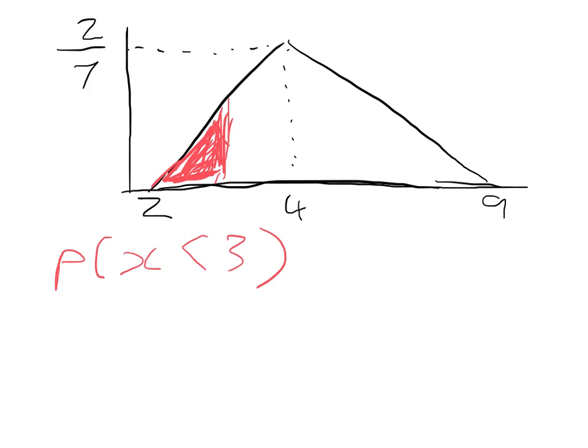This triangle is going to have a height of f(3) and a base of 3 minus 2, which is 1. So we want to find out what that height is — that's f(3). We start by identifying: our a is 2, our b is 9, and our c is 4.